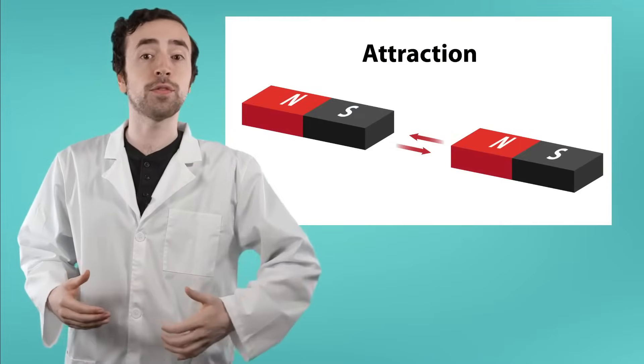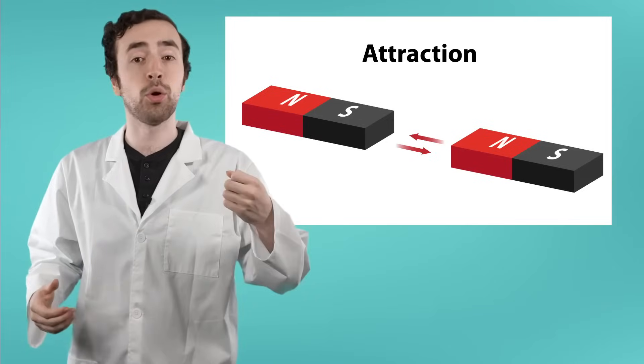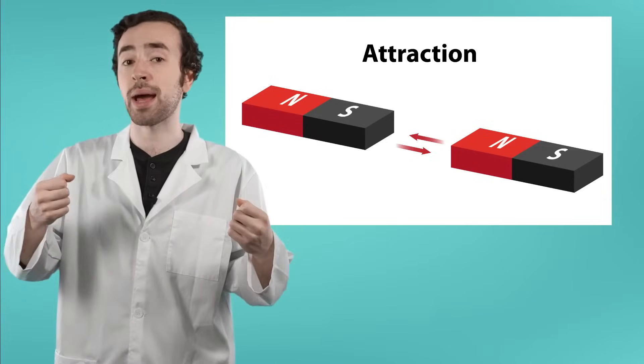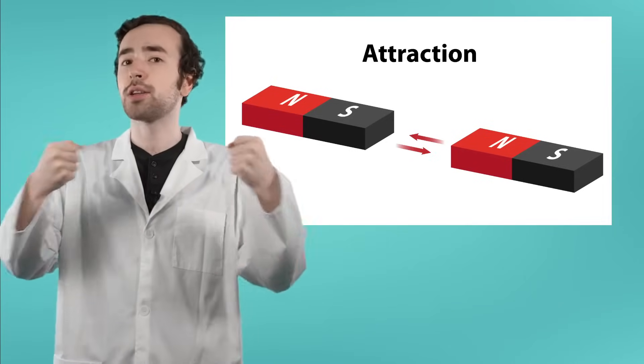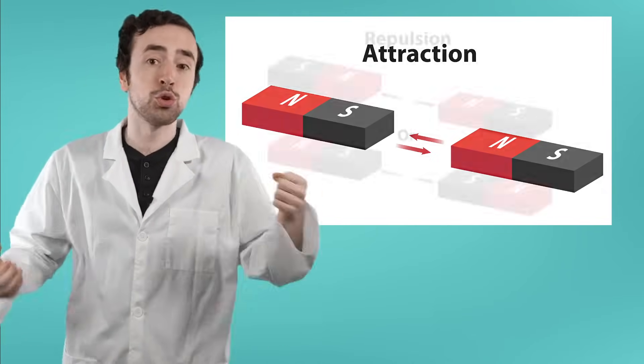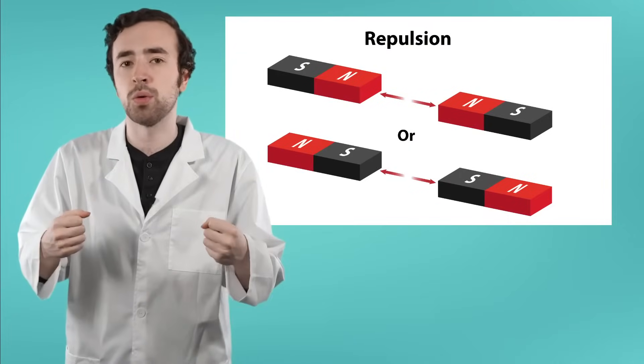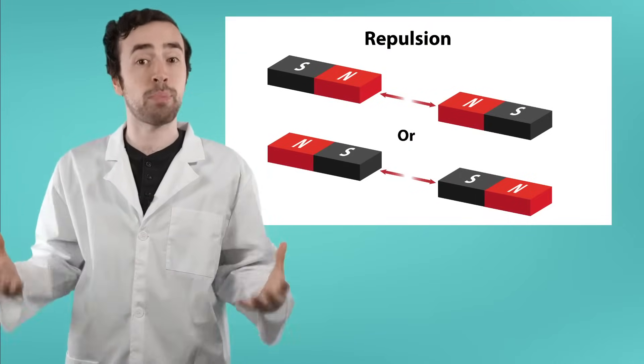When it comes to magnets, opposites attract. So if you try to match a north pole to a south pole of another magnet, then they will attract. However, if you tried to put together two north poles or two south poles, then the magnets will repel.